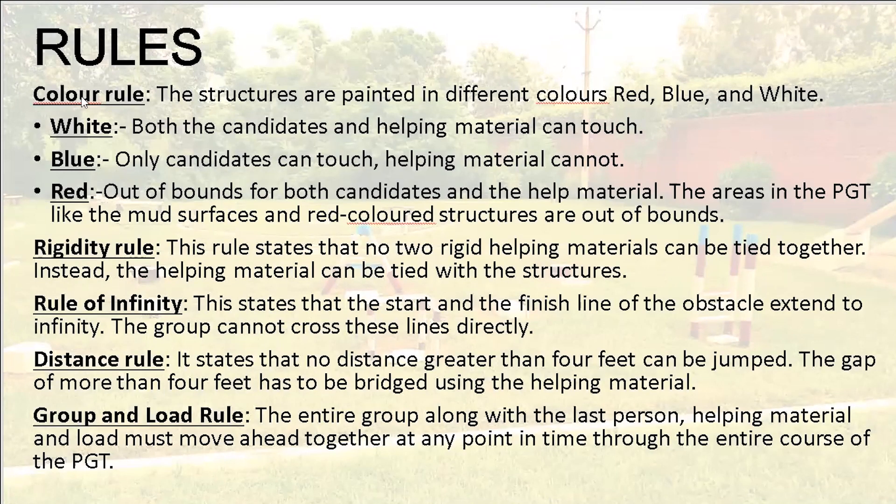First one is the color rule, in which the structures are painted in different colors like blue, red, white and you have to work accordingly. For white, both the candidates and the helping material can touch. On blue color, only candidate can touch, but helping material cannot. For red, red is out of bounds for both candidates and the helping material. The area in the PGT like mud surface and red colored structures are out of bounds.